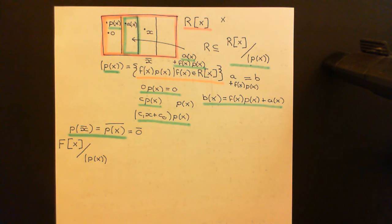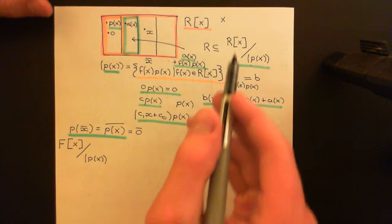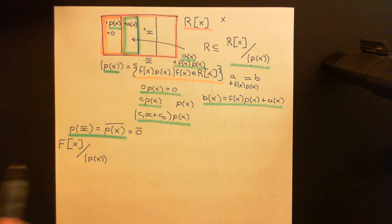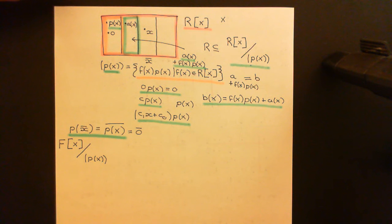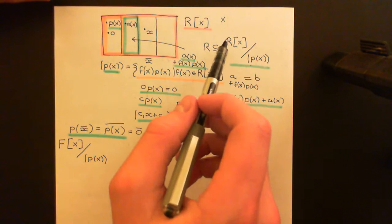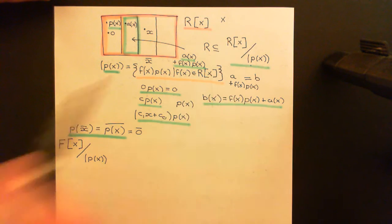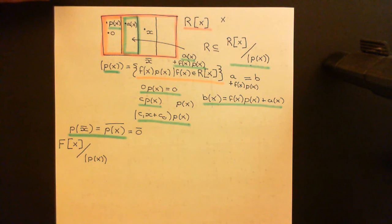Welcome back to this next video in which we are discussing adjoining an element to a ring. What we want to do is develop our intuition a little bit further for why this formal way of adjoining an element onto a ring, which is going to obey a certain polynomial relationship, actually does what we want it to intuitively do. We're going to first do this in the context of a field rather than a general ring, because the theory is considerably easier in the context of a field.